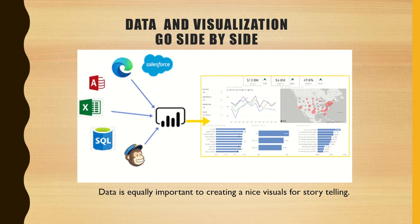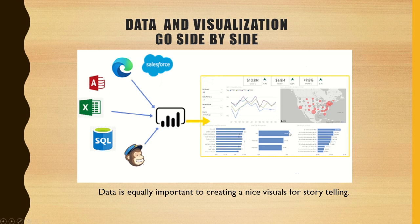Data and visualization always go side by side, and data is equally important to create a great visual for storytelling. As you can see in this diagram, we have all the different data sources on the left-hand side and on the right-hand side it's a great visual. If the data on the left-hand side is not processed correctly, is not clean, or is not accurate, it doesn't matter how beautiful the visualization is — the outcome won't be accurate and we won't be able to make an informed decision, even if it tells a great story, because the numbers won't be accurate. That's why data and visualization go side by side.